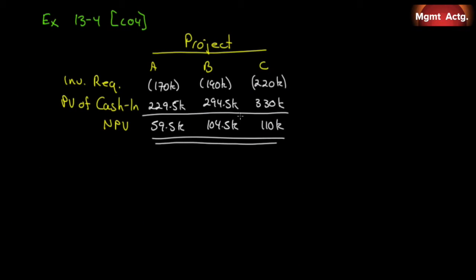Exercise 13.4, preference ranking. Information on three potential projects is given below, and we have them here. I've just replicated what's in the book: A, B, and C. The investment required for each, the present value of the cash inflows for each, and the net present value of each one. You'll notice that the net present value is just our present value of cash in minus the investment required in each case.